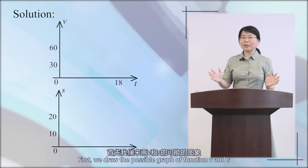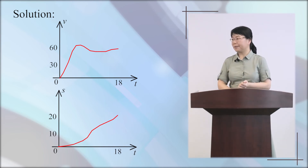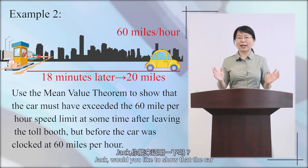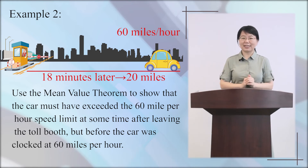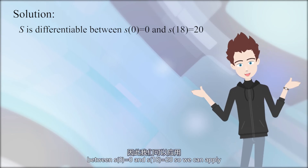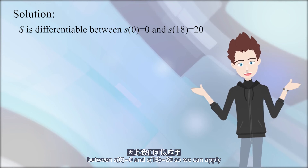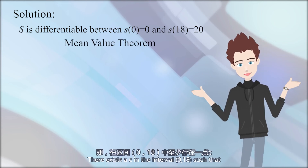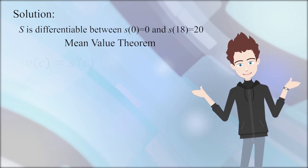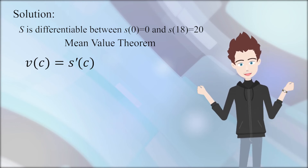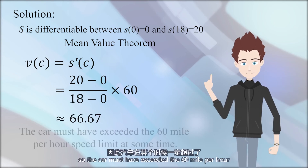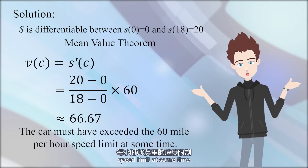First, we draw the possible graphs of the functions v and s. Jack, would you like to show that the car must have exceeded the speed limit? Yes. s is differentiable, with s(0) equals 0 and s(18) equals 20, so we can apply the mean value theorem. There exists a c in the interval (0, 18) such that v(c) equals s prime of c equals 20 over 18 times 60 miles per hour. So the car must have exceeded the 60 miles per hour speed limit at some time.